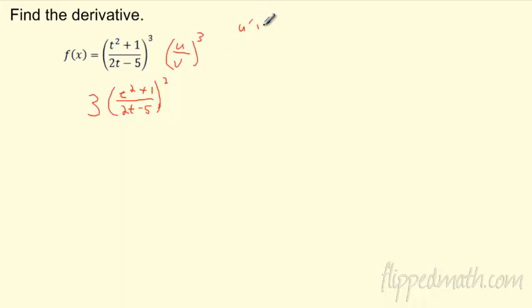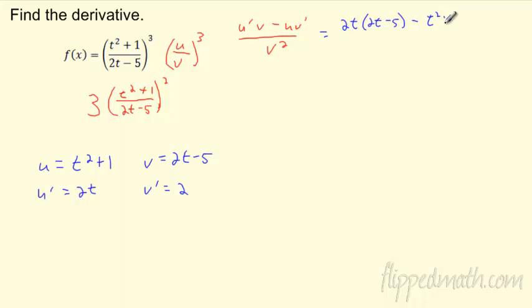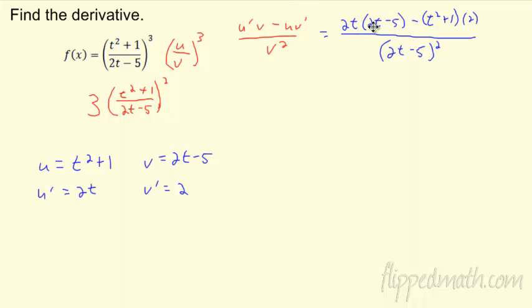So the derivative of the inside requires a quotient rule: (u'v - uv') / v². Here u = t²+1, so u' = 2t. And v = 2t-5, so v' = 2. Plugging those in: u'v = 2t·(2t-5), minus u·v' = (t²+1)·2, all over v² = (2t-5)². That is just the derivative of the inside right there.